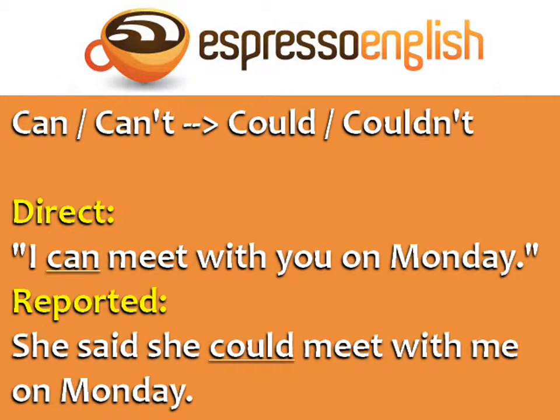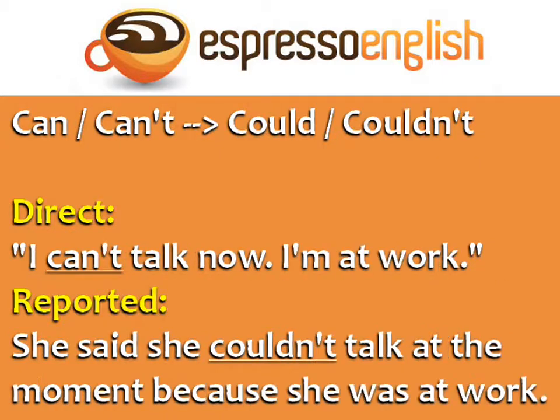Statements with can and can't become could and couldn't in reported speech. Direct: 'I can meet with you on Monday.' Reported: 'She said she could meet with me on Monday.' Direct: 'I can't talk now. I'm at work.' Reported: 'She said she couldn't talk at the moment because she was at work.'